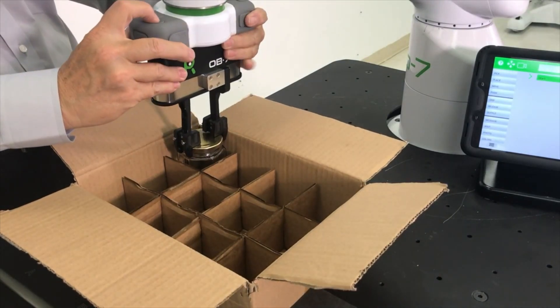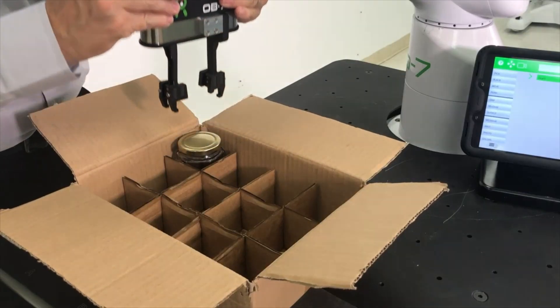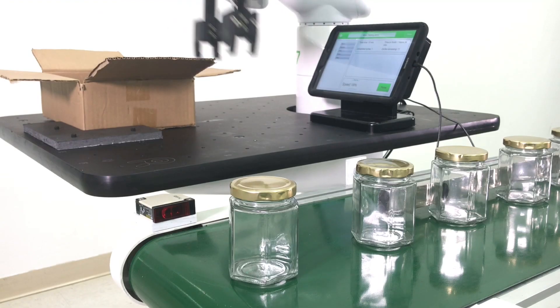Then move the jar into the carton and press the place button. Once again, OB7 learns and records how to place the jar into the carton.